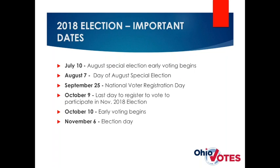Important dates: early voting for the August special election has begun and runs through August 7th. September 25th is National Voter Registration Day. October 9th is the last day to register to vote for the November election. October 10th is the first day of early voting, and November 6th is Election Day.